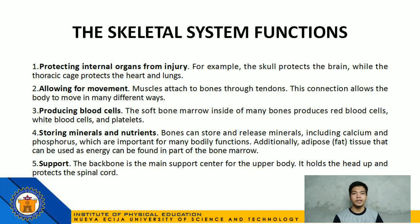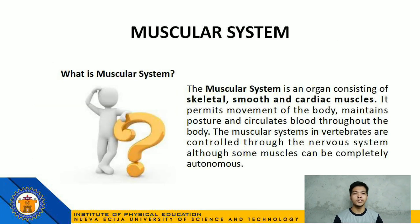Next from the list is the muscular system. It is an organ system consisting of skeletal, smooth, and cardiac muscles. It permits movement of the body, maintains posture, and circulates blood throughout the body. The muscular system in vertebrates is controlled through the nervous system, although some muscles can be completely autonomous.